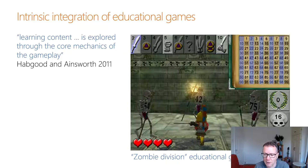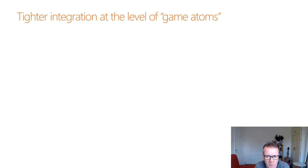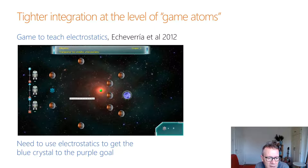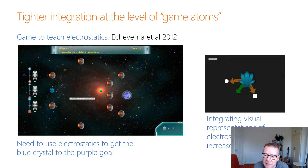This was further explored by Echeveria, who explored tighter integration at the level of individual game atoms — the small mechanisms within the game. He used the game to teach electrostatics, where you have to move a blue crystal on the left to a purple goal on the right using electrostatic forces. Echeveria found that learning was increased by making explicit the electrostatic forces being taught, showing visual representations of the forces and how they combined, which then increased learning.